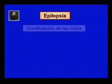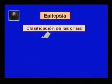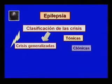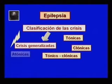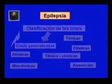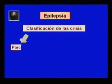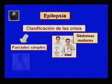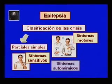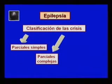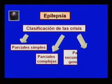El principal y más llamativo fenómeno clínico a través del cual se expresa la epilepsia es la crisis. Las mismas se clasifican en crisis generalizadas, que pueden ser tónicas, clónicas, tónico-clónicas, atónicas, mioclónicas y las ausencias típicas y atípicas. Crisis parciales simples, que son aquellas que no se acompañan de afectación de la conciencia y pueden ser con síntomas motores, sensitivos, autonómicos o psíquicos. Las crisis parciales complejas cuando se acompañan de afectación de la conciencia, y las crisis parciales secundariamente generalizadas.